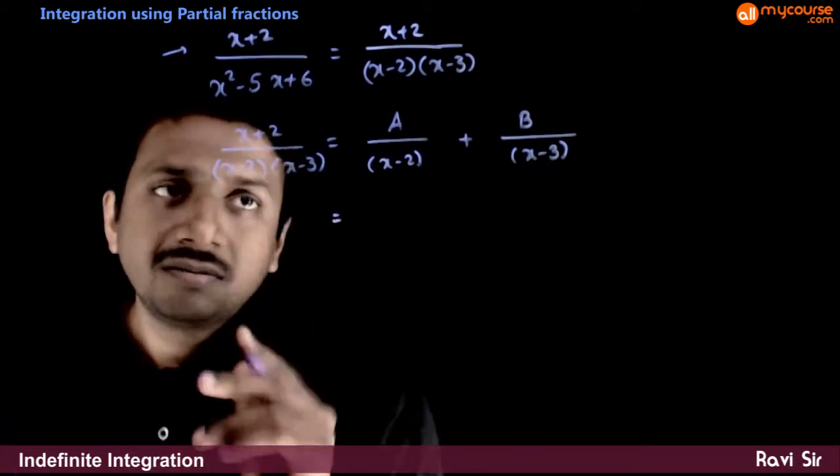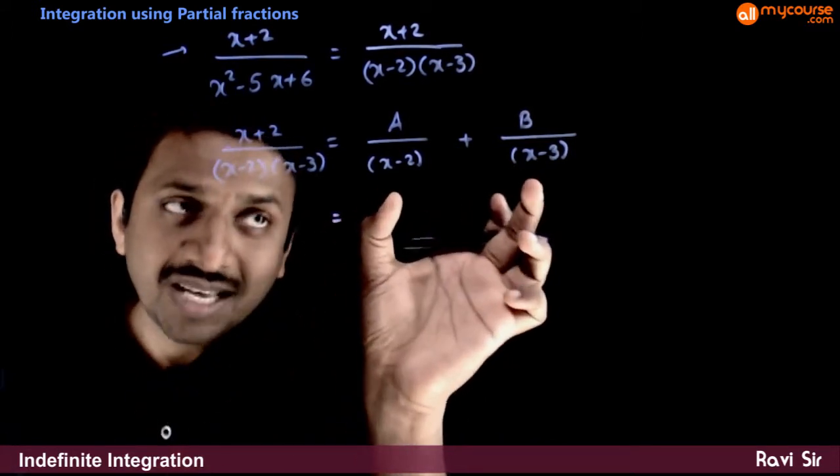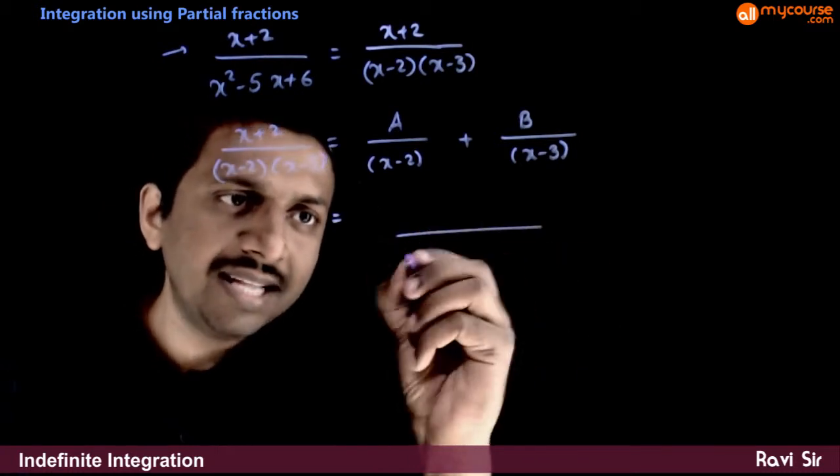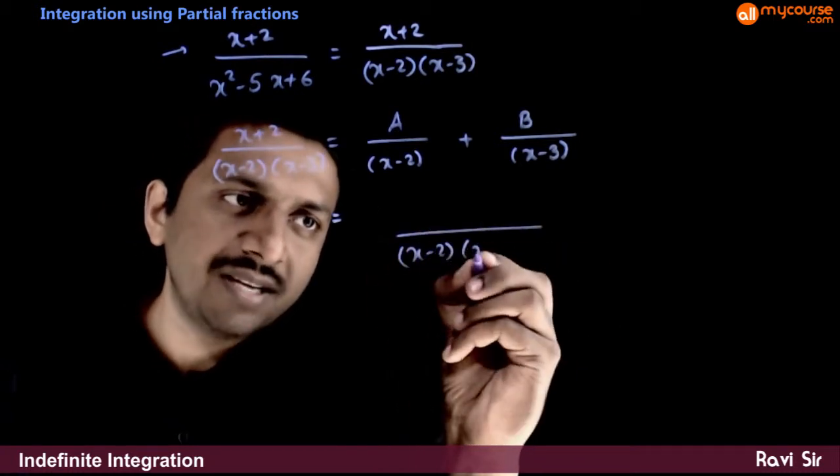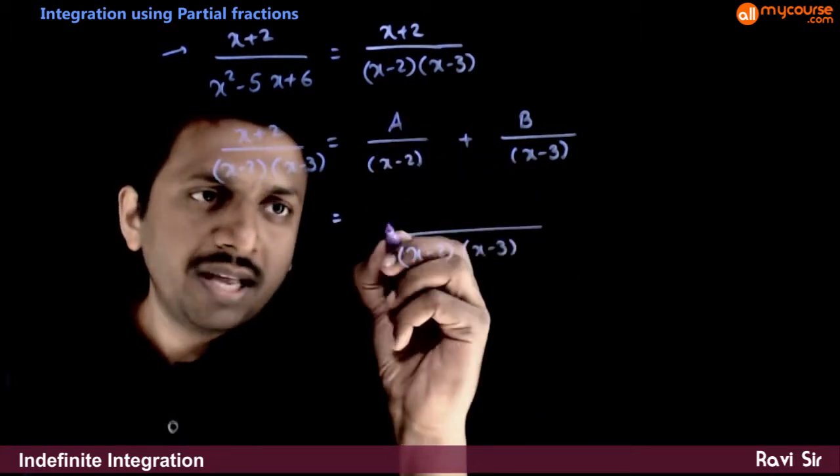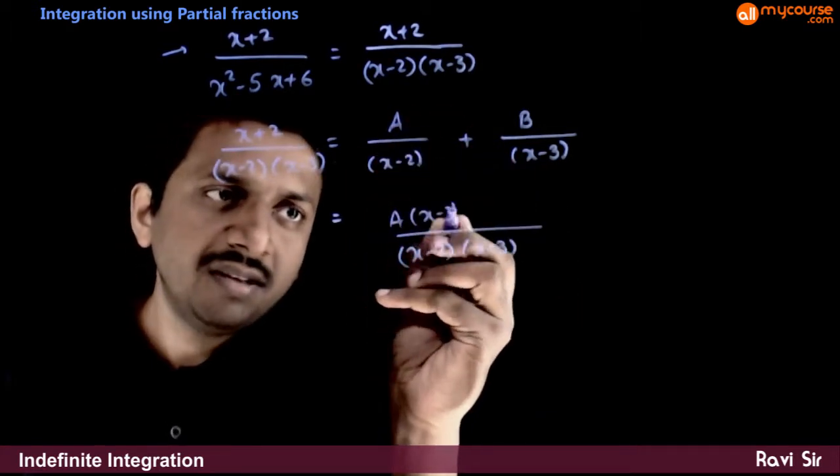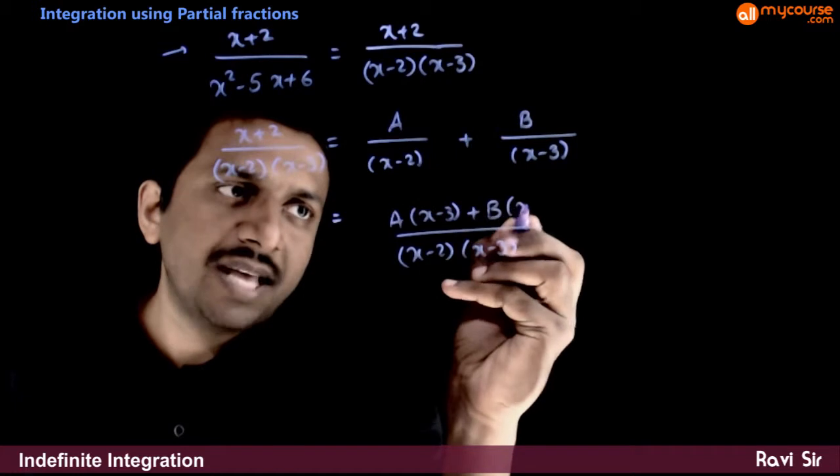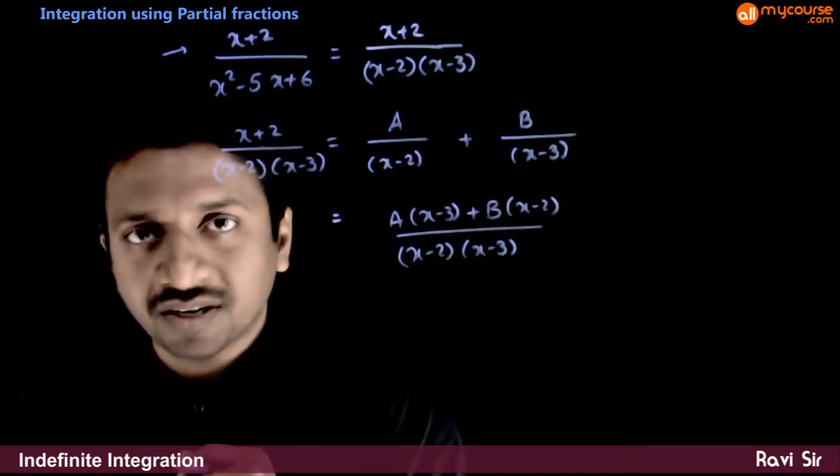Now, this expression, this sum is equal to - if you take the LCM, x minus 2 times x minus 3 is LCM. If you add these two, a times x minus 3 plus b times x minus 2 by x minus 2 into x minus 3.